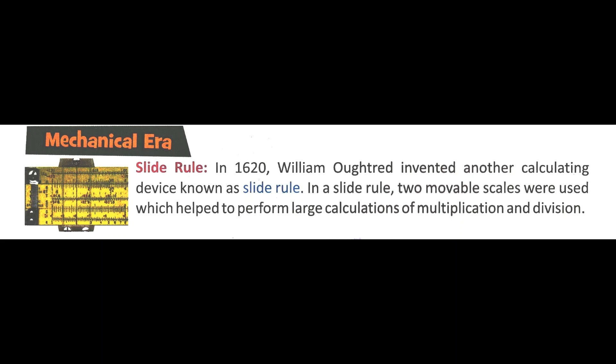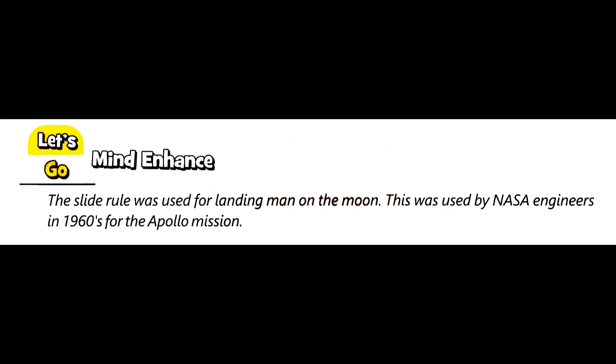The slide rule was invented in 1620 by William Oughtred. In the slide rule, two movable scales were used which helped to perform large calculations of multiplication and division. The slide rule was used for landing man on the moon and was used by NASA engineers in 1960 for the Apollo mission.